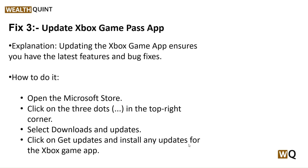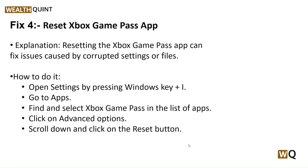Our fourth step is to reset the Xbox Game Pass app. Resetting it can fix issues caused by corrupted settings or files. Open Settings with Windows key + I, go to Apps, and select Xbox Game Pass from the list. Click on Advanced Options, scroll down, and click the Reset button.